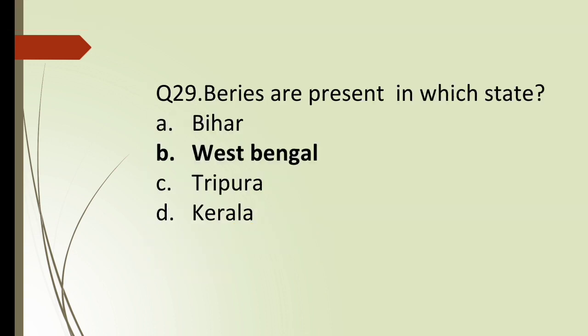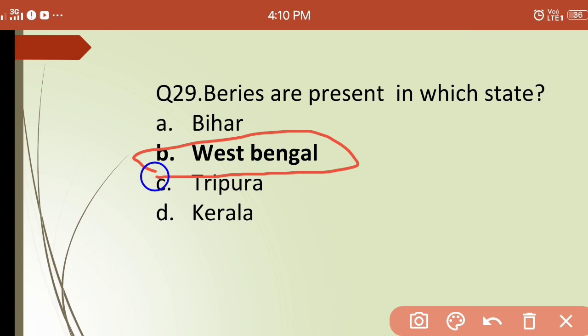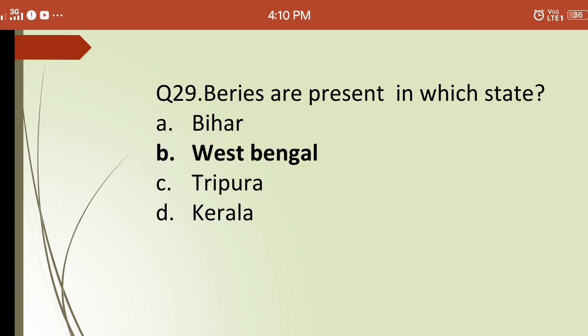Twenty-ninth question: bheeries are present in which state? Options are: (a) Bihar, (b) West Bengal, (c) Tripura, (d) Kerala. The correct answer is (b) West Bengal — bheeries are water-locked areas used for fish production in West Bengal.